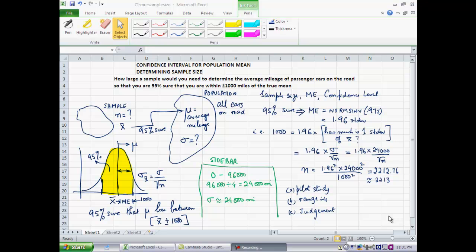In this segment, we will see how to determine the appropriate sample size that should be used when developing a confidence interval for the population mean. The problem setting is: How large a sample would you need to determine the average mileage of passenger cars on the road, so that you are 95% sure that you are within plus or minus 1000 miles of the true mean.